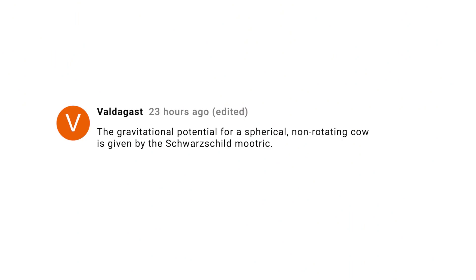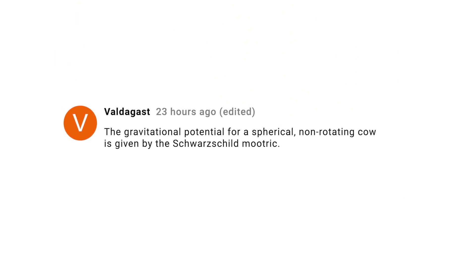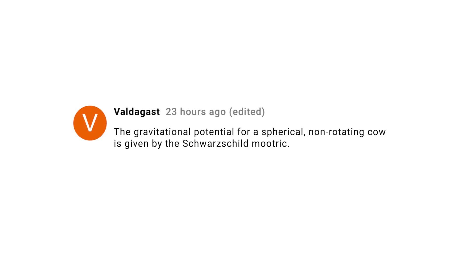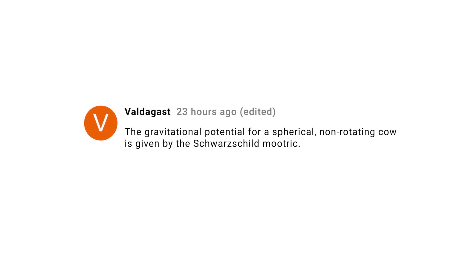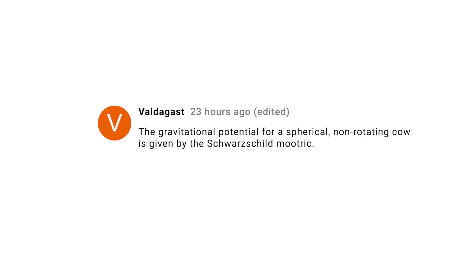And finally, in the best tradition of introductory physics approximations, Valdegast tells us the gravitational potential for a spherical, non-rotating cow is given by the Schwarzschild metric. Hi Valdegast — that was a horrible pun, truly awful, you should be ashamed. So first, let me salute you. And then I think you deserve more recognition, best demonstrated by two insightful lads by the name of Wayne and Garth: 'We're not worthy! We're not worthy!'